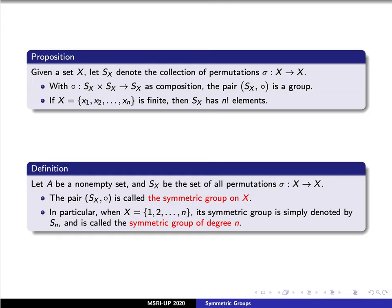We'll give this a name. If X is a non-empty set and S_X is the set of permutations, then the pair S_X along with composition is called the symmetric group on X. In particular, if X consists of the numbers 1, 2, through n, then its symmetric group is simply denoted by S_n, and it is called the symmetric group of degree n.